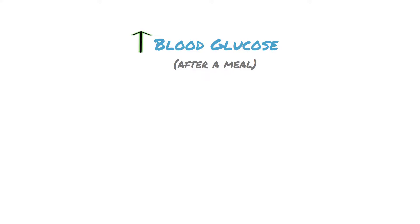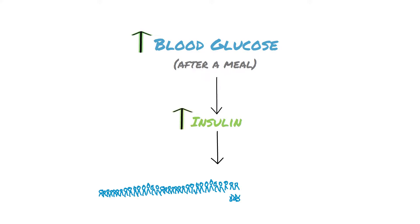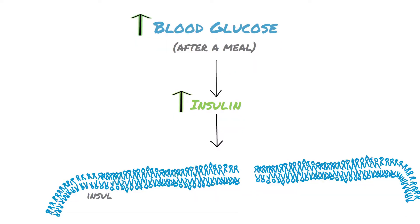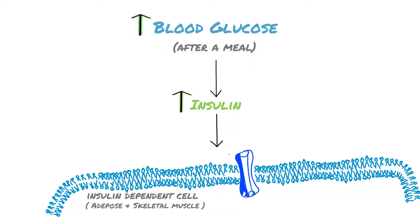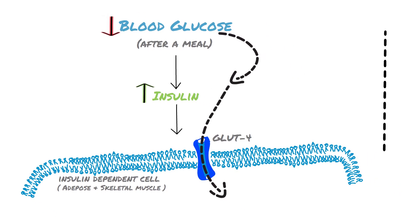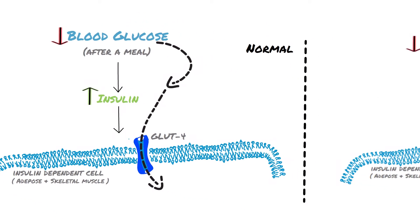In hyperglycemic conditions, such as after a meal, insulin is increased, and when insulin is increased it stimulates uptake of glucose by insulin-dependent tissues — adipose and skeletal muscle — via glucose transporter 4. So the increased blood glucose level is lowered and blood glucose level is maintained.